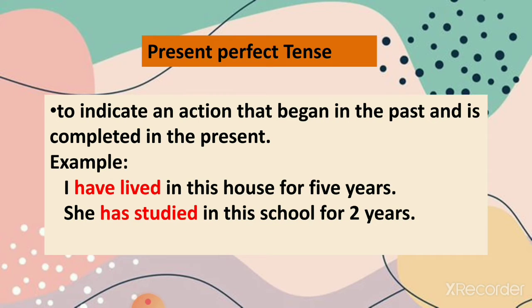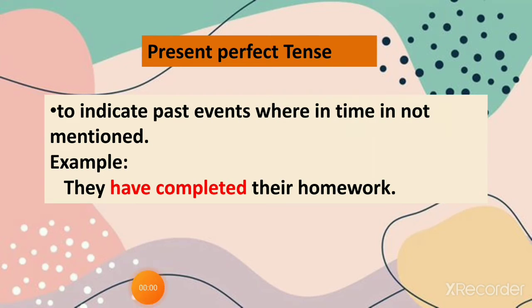Present perfect tense is also used to indicate an action that began in the past and is completed in the present. For example: I have lived in this house for 5 years — this action has begun in the past and is completed now. She has studied in this school for 2 years. Present perfect tense also indicates past events wherein time is not mentioned. For example: they have completed their homework.